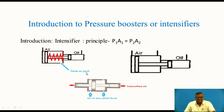In case of intensifiers, we have certain types. The construction and working can be observed here. The difference in areas is used to get a difference in pressure. The principle on which it works is P1·A1 = P2·A2, where P1 is the lower pressure and A1 is the larger area of the piston on the left-hand side, and P2 is the larger pressure.